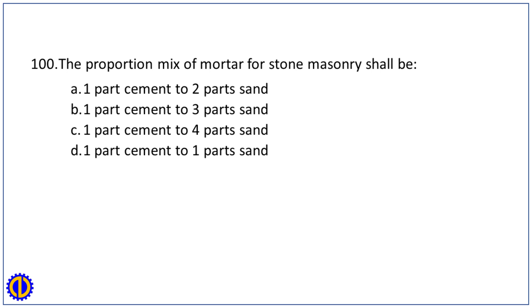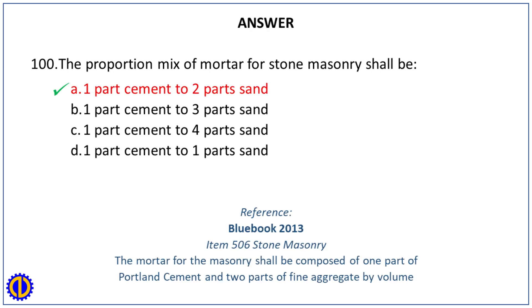Question 100. The proportion mix of mortar for stone masonry shall be: A. 1 part cement to 2 parts sand. B. 1 part cement to 3 parts sand. C. 1 part cement to 4 parts sand. D. 1 part cement to 1½ parts sand. Answer: A. 1 part cement to 2 parts sand. Reference: Blue Book 2013, Item 506 Stone Masonry — the mortar shall be composed of 1 part Portland cement and 2 parts fine aggregate by volume.